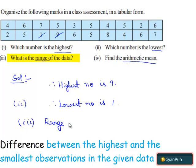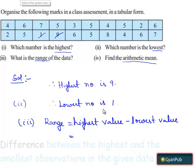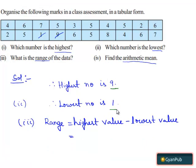So range equals highest value minus lowest value. Here the highest value is 9 and the lowest value is 1. Therefore, 9 minus 1 equals 8. Therefore, the range of the given data is 8.